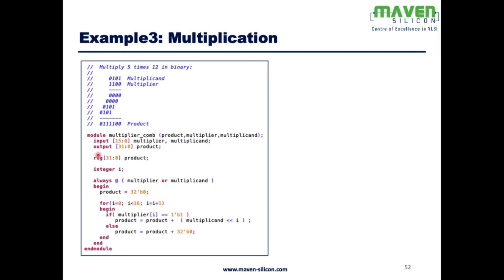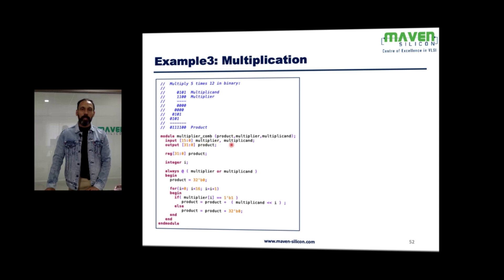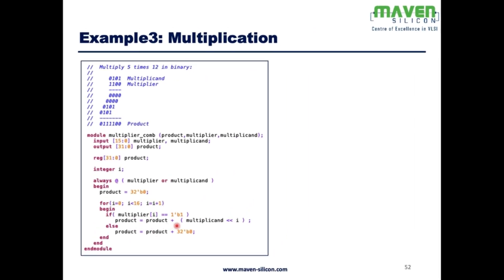In Verilog, we define the logic with a result product and operands: multiplier and multiplicand. Let's say multiplier and multiplicand are 16 bits and the product is going to be 32 bits. Whenever any operand changes, it performs multiplication — product is initialized with zero, then we run a for loop 16 times, checking each bit of the multiplier. If that bit is high, we do: product = product + (multiplicand left shift i). This handles multiplication, addition, and left shift.